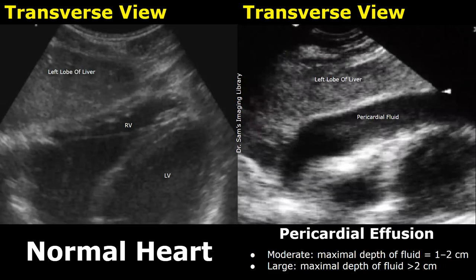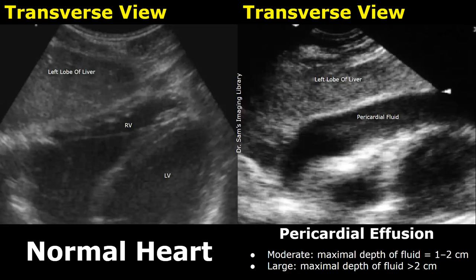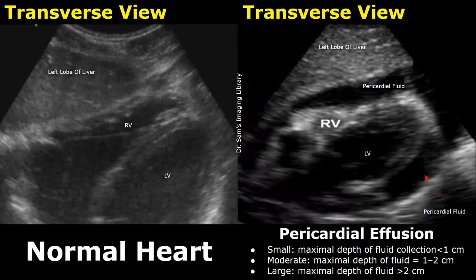In this case of pericardial effusion, the amount of fluid is more. A moderate pericardial effusion has a maximal depth of fluid between one to two centimeters, and a large pericardial effusion has a maximal depth of more than two centimeters. Here is another image of a pericardial effusion where we can see a significant amount of anechoic fluid surrounding the heart.